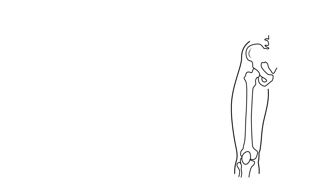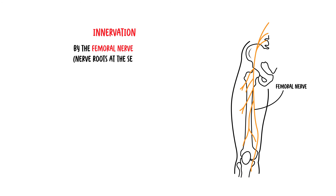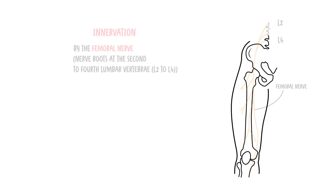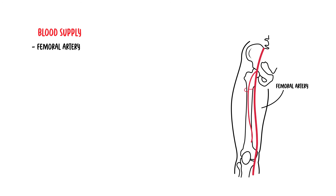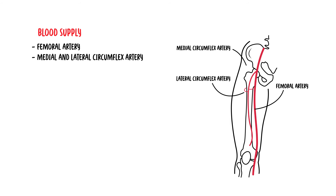The innervation of all these muscles is by the femoral nerve, which arises from the nerve roots at the second to fourth lumbar vertebrae. The blood supply of these muscles is from the femoral artery, the medial and lateral circumflex arteries, and the profunda femoris artery, which are the deep femoral branches.